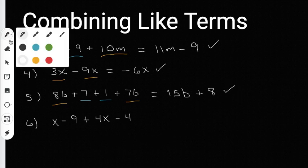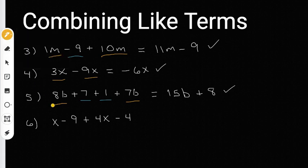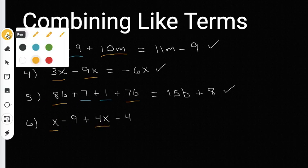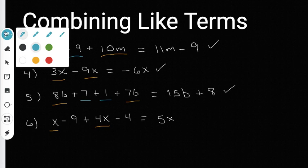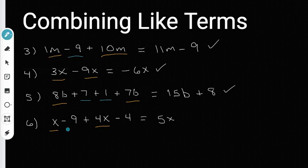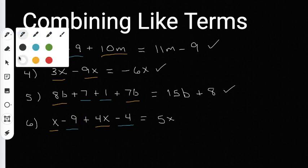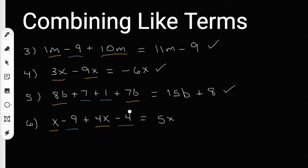For the last one, I underline the X terms first. This is going to be a one X and a four X. So when they combine, I'm going to get a five X. And then the regular numbers, I'm going to underline those in blue like usual. I have a negative nine and a negative four. When I add negative nine and negative four, they combine to give me a negative 13.